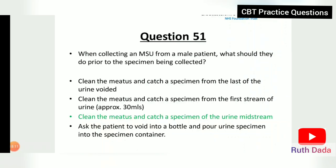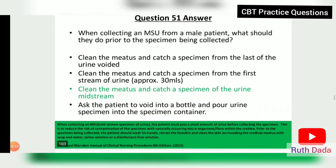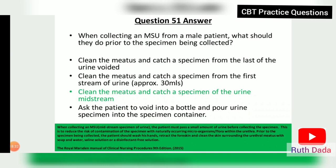Question 51: When collecting an MSU from a male patient, what should they do prior to the specimen being collected? They must clean their meatus and catch a midstream specimen of urine. The patient must pass a small amount of urine before collecting the specimen to reduce the risk of contamination with microorganisms in the urethra. Prior to collection, the patient should wash his hands, retract the foreskin, and clean the surrounding skin with soap and water, saline, or a disinfectant-free solution.